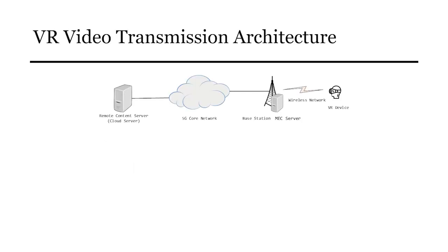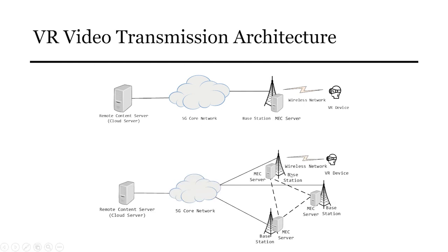In the concurrent popular architecture, the MEC server is deployed near the base station where users access for caching the concurrent popular videos, thus significantly limiting the request latency of VR devices. To fully utilize the limited storage space to meet more user requests, it is an inevitable trend to collaborate with multiple MEC servers.